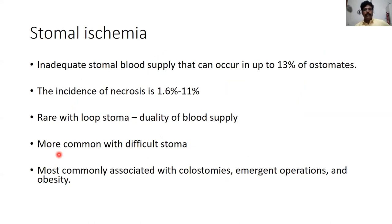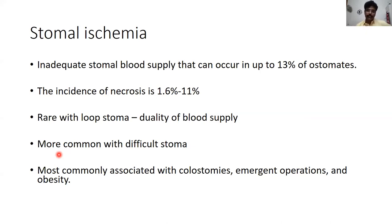The next complication is stomal ischemia. There is a slight difference between ischemia and full thickness necrosis. Ischemia occurs in up to 13% of all ostomates, whereas necrosis is slightly less common, ranging from 1.6 to 11%, depending upon the stoma type and the studies.